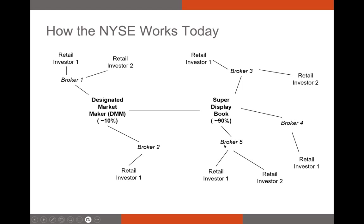The floor of the NYSE handles about 10% of all trading activity, typically for very large orders where brokers connect with the DMM. Super Display Book handles about 90% of exchange activity, where brokers like Fidelity or Robinhood connect and process orders for their clients.